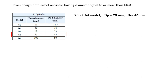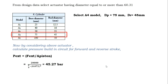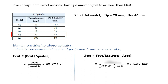Using the selected A4 actuator, calculate the pressure built into the circuit for the forward and reverse strokes. Pressure equals force upon area. The pressure at the time of extension is 45.27 bar, and the pressure built at the time of retraction is 35.37 bar.